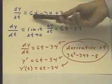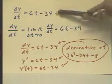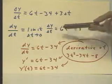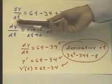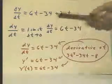Delta t doesn't affect the 6t or the negative 34, it affects only this, and this term shrinks away, leaving us with this. We call this dy dt, the derivative of y with respect to t.